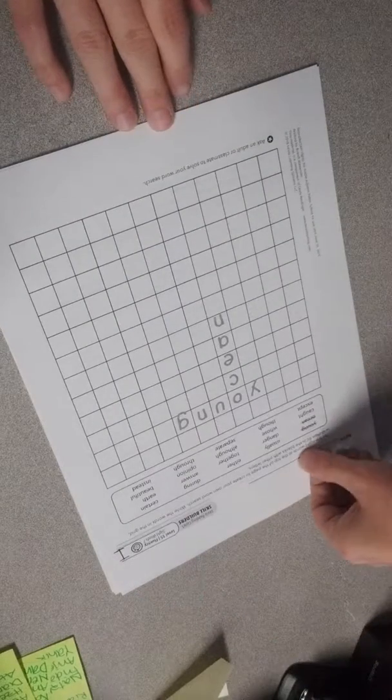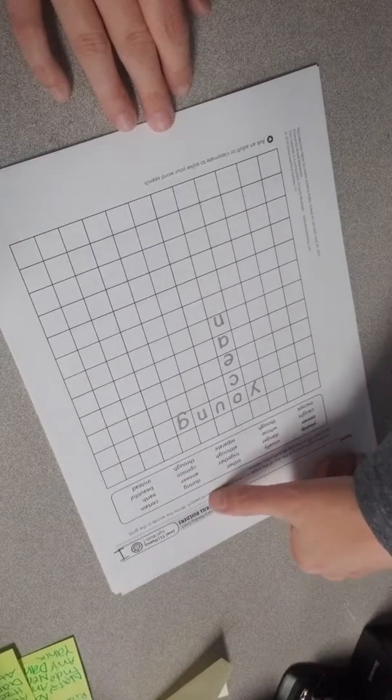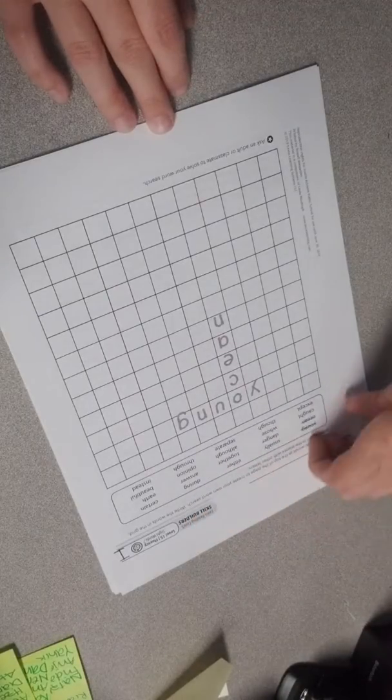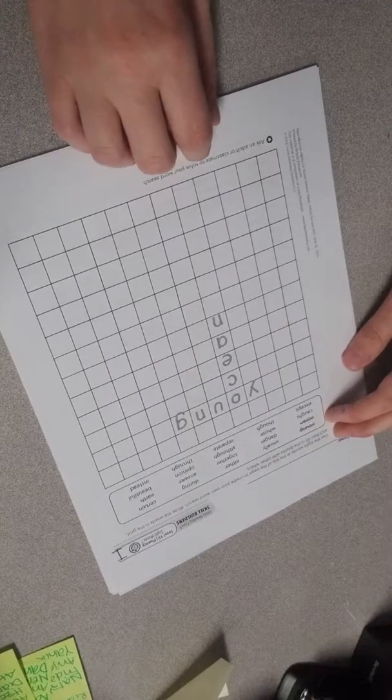The instructions say use the sight words at the top of the page to create your own word search. Write the words in the grid and then fill in the blanks with other letters. So you're going to make your own word search.